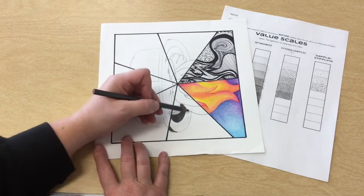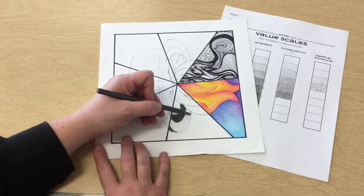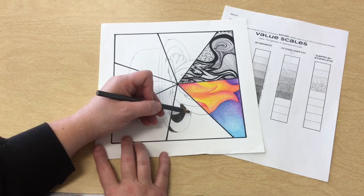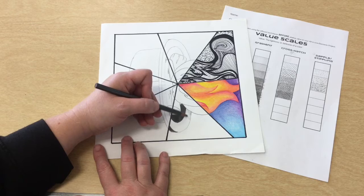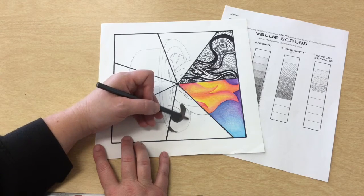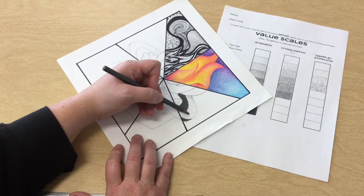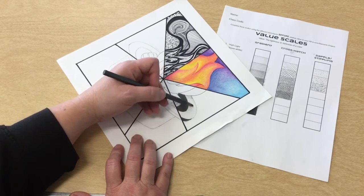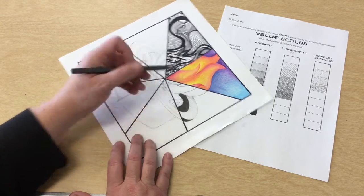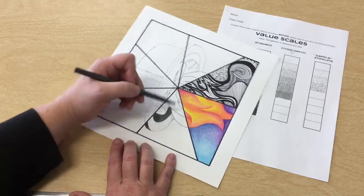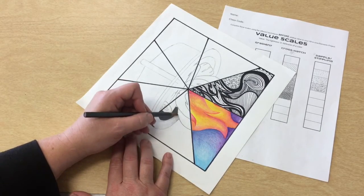So maybe this one would be a little bit lighter here. But now I'm doing softer pressure. And I can get even lighter as I get closer to the edge. So I can create a gradient in this space as well. Maybe I'll go a little bit this way.